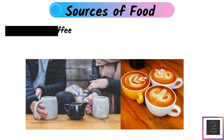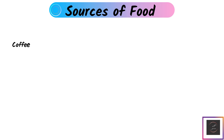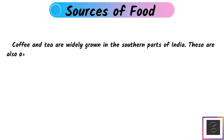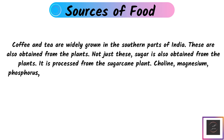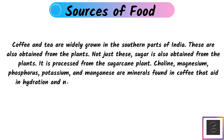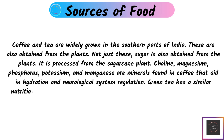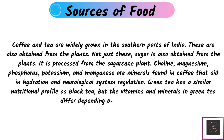Tea and coffee are widely grown in the southern part of India and are also obtained from plants. Sugar is also obtained from plants, processed from the sugarcane plant. Magnesium, phosphorus, potassium, and manganese are minerals found in coffee that aid hydration and neurological system regulation. Green tea has a similar nutrition profile to black tea, but the vitamins and minerals in green tea differ depending on when it is picked.